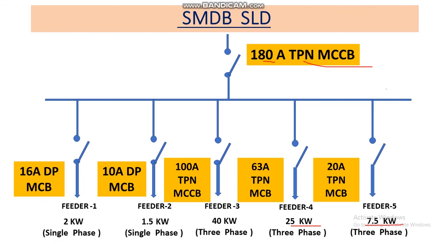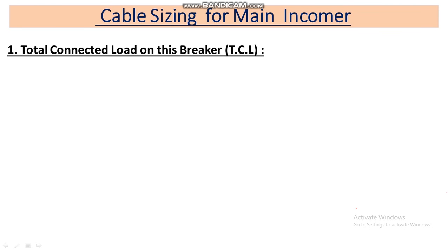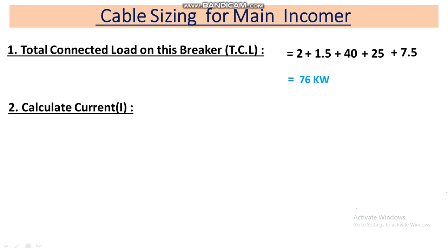Now let's calculate the cable size for individual feeders. First, let's calculate the cable size for the main incomer. We have to sum all the feeder loads: 2 + 1.5 + 40 + 25 + 7.5 kilowatts, which equals 76 kilowatts. So our total connected load on the main incomer is 76 kilowatts. Since this is a three-phase load, we use the three-phase power formula to calculate the current.